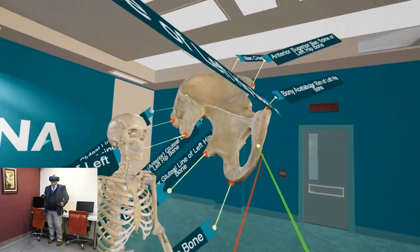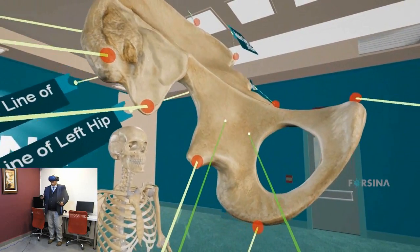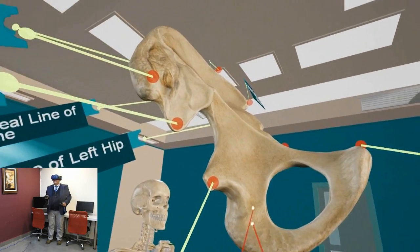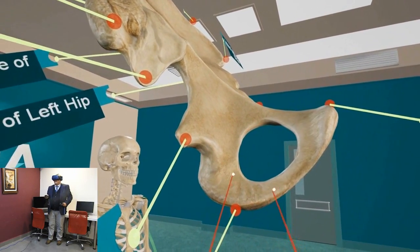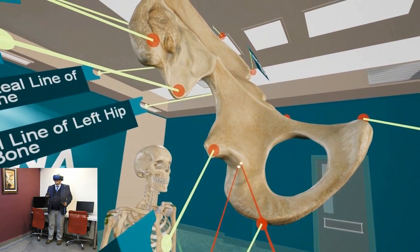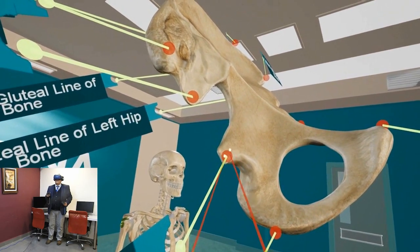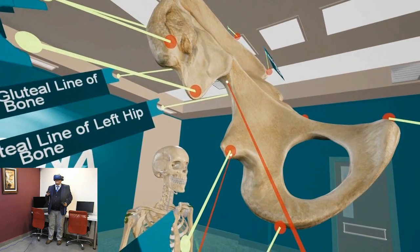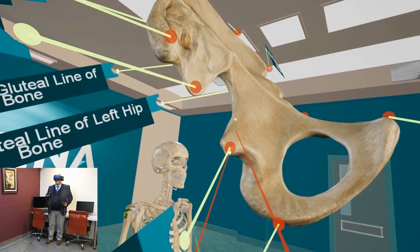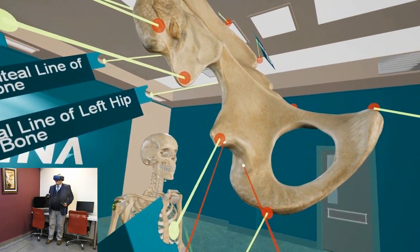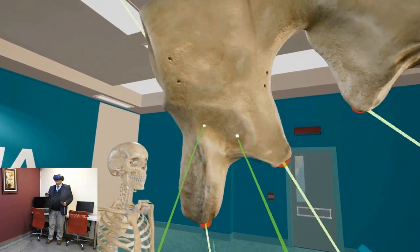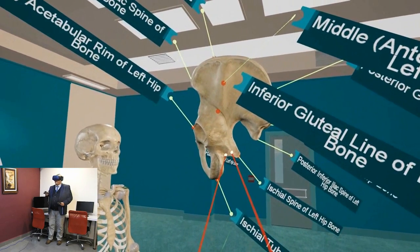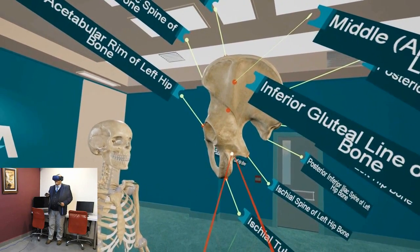Let's move to the ischial part of the hip bone. The ischial bone has a body and a ramus called the ischial ramus. As we go up, it has a projection called the ischial spine — a very important landmark. Above the ischial spine is the greater sciatic foramen, and below it is the lesser sciatic foramen. You can see this from the posterior view of the bone: the ischial spine, the greater sciatic foramen above it, and the lesser sciatic foramen below.